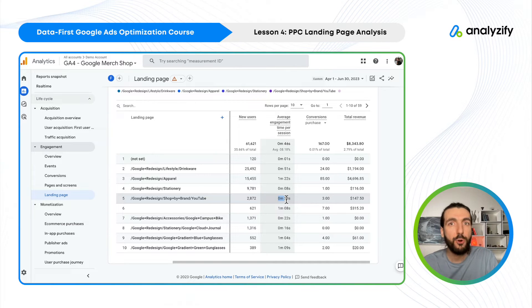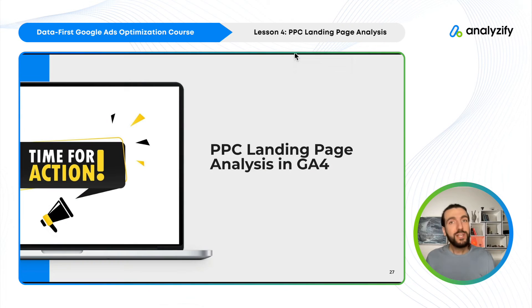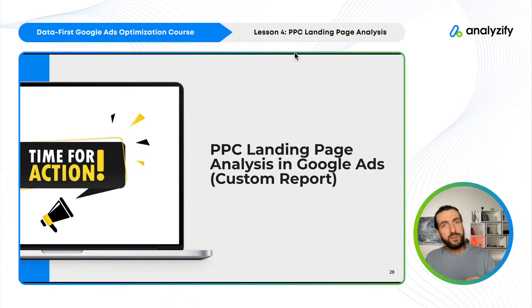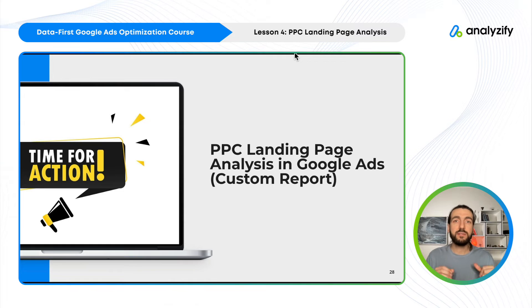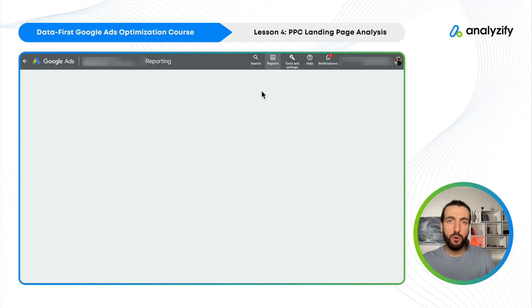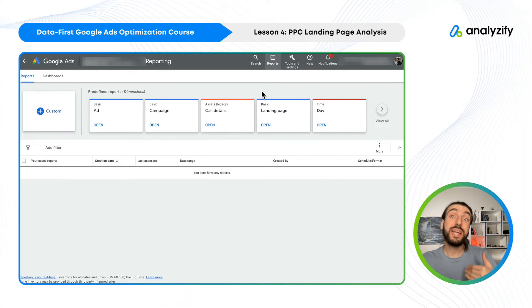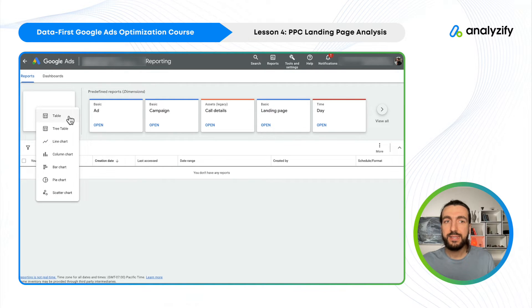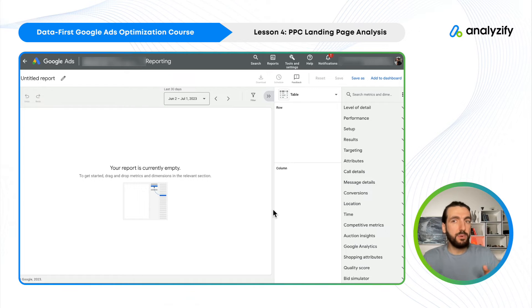That's the landing page report in GA4 — we just did a PPC landing page analysis. Now we will do the same thing with a Performance Max focus in Google Ads by creating a custom report. Once you are in your Google Ads account, click Reports and then Reports again. We will create a custom report and save it so you can check it later.